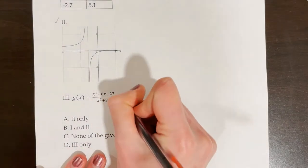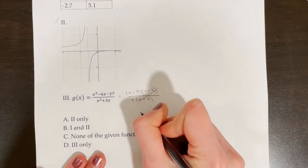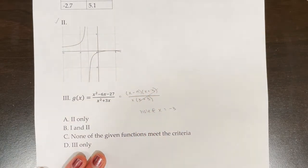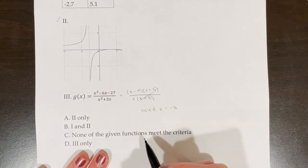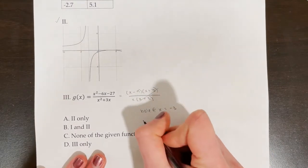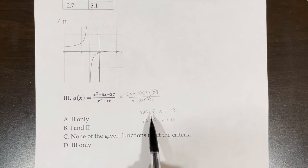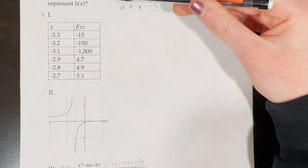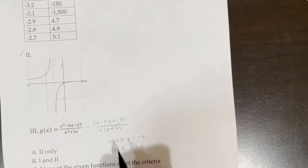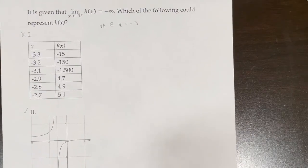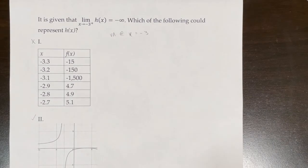Function 3 is a rational function. After factoring, there is a common factor of (x + 3) in the numerator and denominator, meaning there is a hole at x = −3, not a vertical asymptote. The remaining denominator gives a vertical asymptote at x = 0, which is not near x = −3. Since there is no vertical asymptote at x = −3, function 3 could not represent h(x).